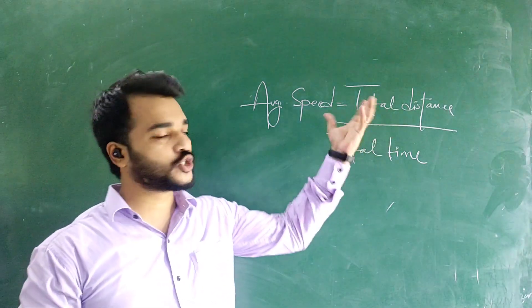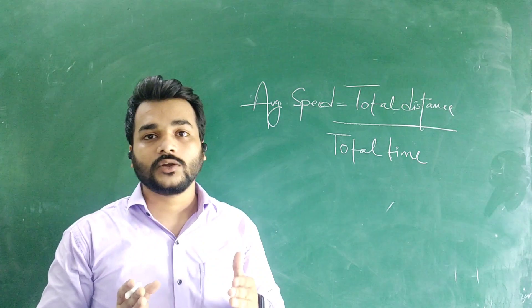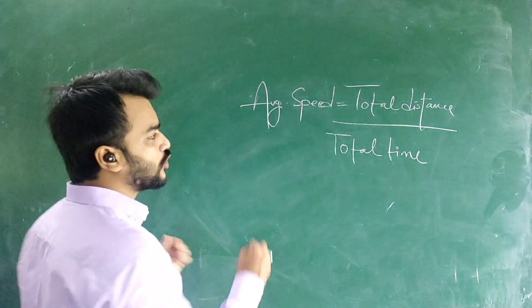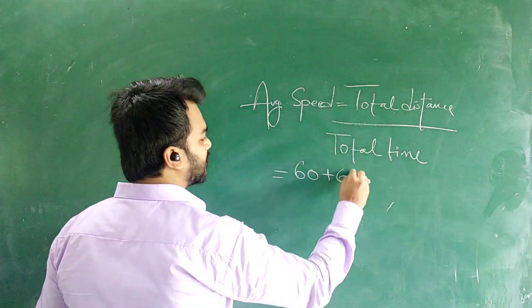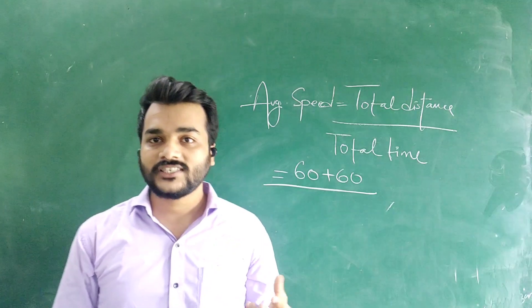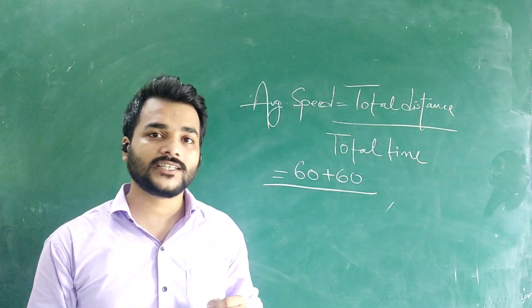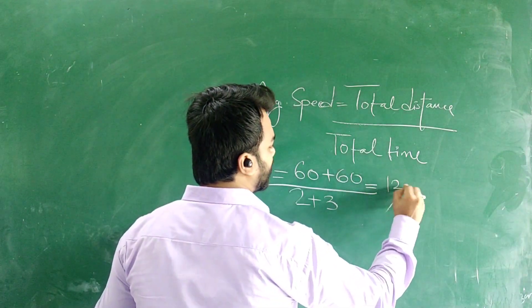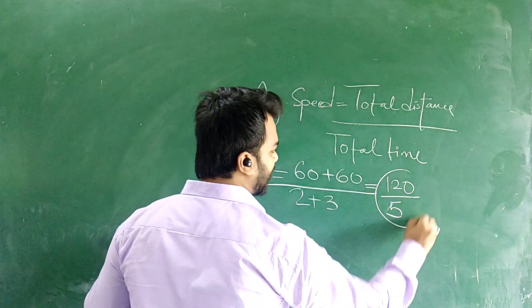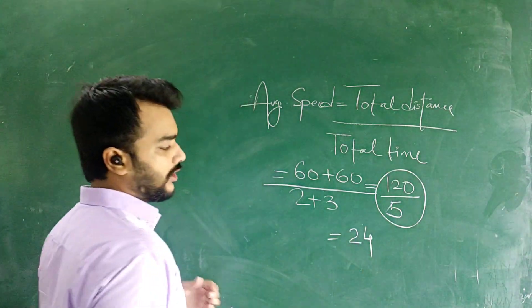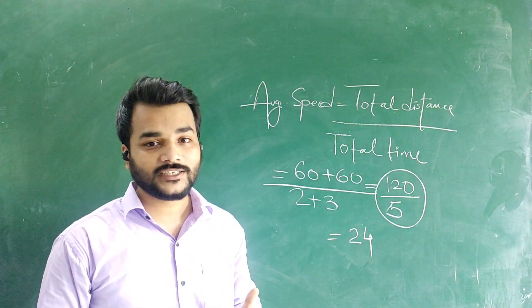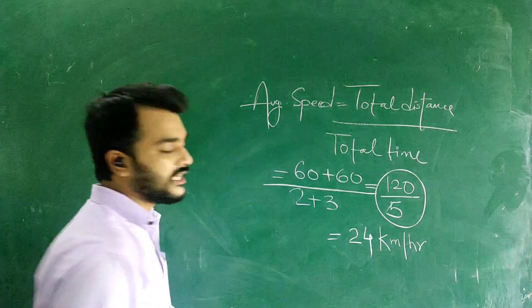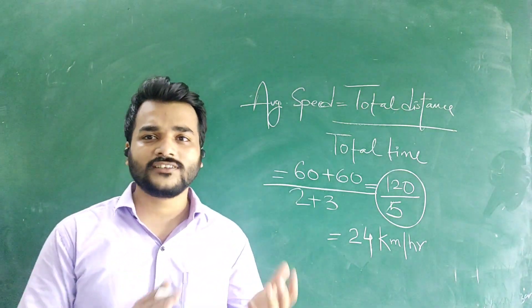Substituting the values: 120 divided by 5 gives us 24 kilometers per hour. So the average speed is 24 km/h. Now let us find the average velocity. The formula for average velocity is total displacement upon total time. The displacement here is 0 because the body returns to the same point from which it started. So the average velocity is 0.